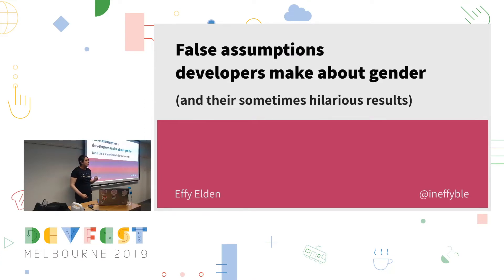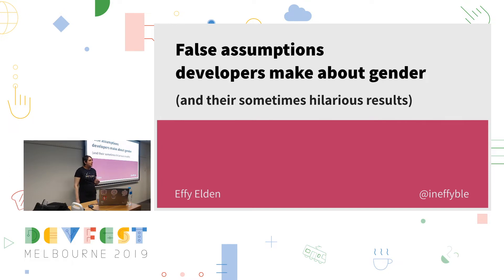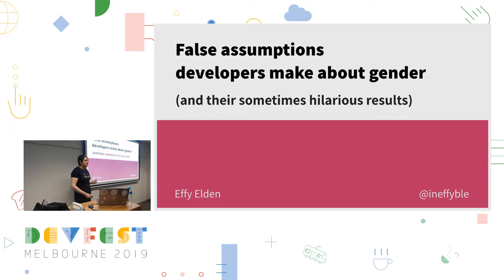It's probably the most commonly collected piece of demographic data. If your job requires you to work with any information about customers, users, or people, chances are it's unavoidable. But a lot of how we collect and use gender is based on certain assumptions that don't always hold true. And when those assumptions are actually proven false, it can have some pretty interesting — and pretty hilarious — results. That's where this talk comes in.